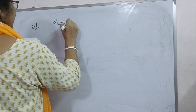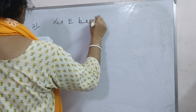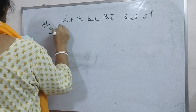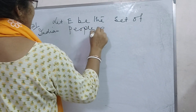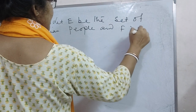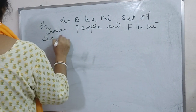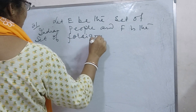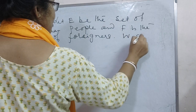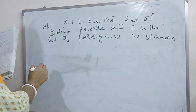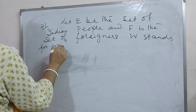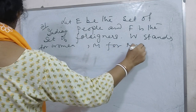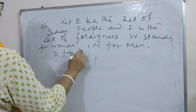Let E be the set of Indian people and F be the set of Foreigners. W stands for Women, M for Men, and D for Doctors.